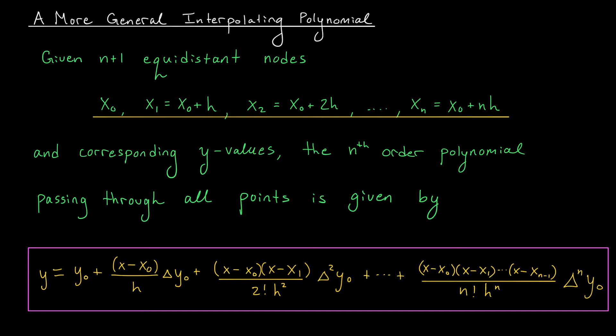The x terms also look pretty similar to what we had before. Except now, instead of having the numbers 0, 1, and so on, all the way up to n minus 1, we have our new list of terms, x0, x1, all the way up to x n minus 1.